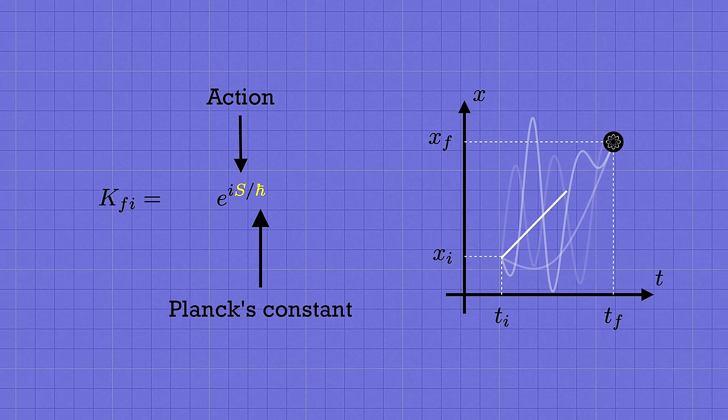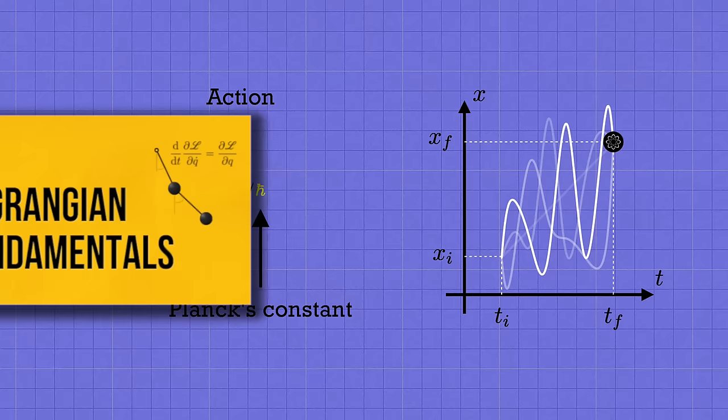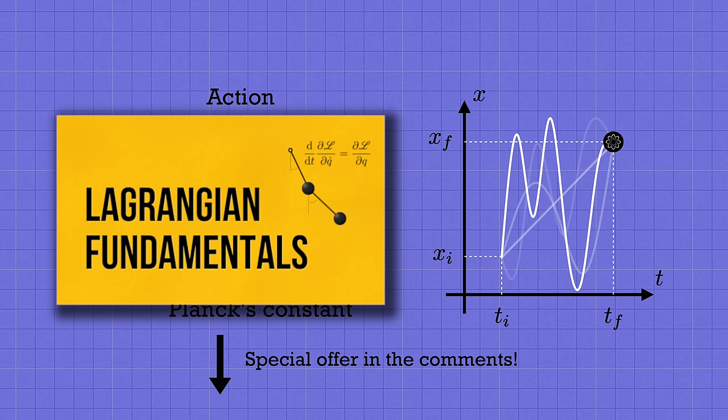I'll explain how that's defined later on, but the action is the central object in the more powerful approach to classical mechanics, known as the Lagrangian formulation, which you might have heard about before. I've actually created a whole course all about Lagrangian mechanics. I'll pin a link to that down in the comments, along with a very special offer code for the first 100 students who use it to sign up.